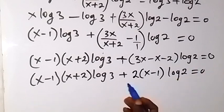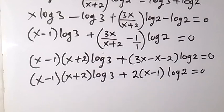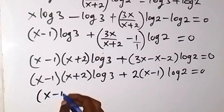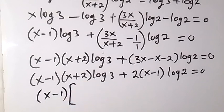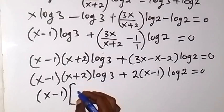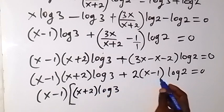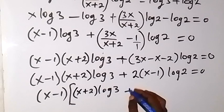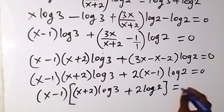I want to take x minus 1 out as a common factor. So what we have will now be (x minus 1) times the bracket [(x plus 2) log 3 plus 2 log 2], equals 0.